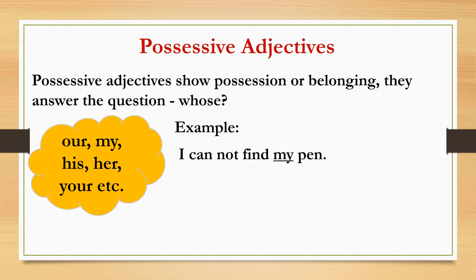Possessive adjectives show possession or belonging. They usually answer the question whose. These adjectives show who owns something or to whom something belongs. For example: my house, your room, our dog. We also use them for people — for example, my parents, your aunt, our friend. Example sentence: I cannot find my pen. My pen — the pen that belongs to me. So in this sentence, my is the possessive adjective.